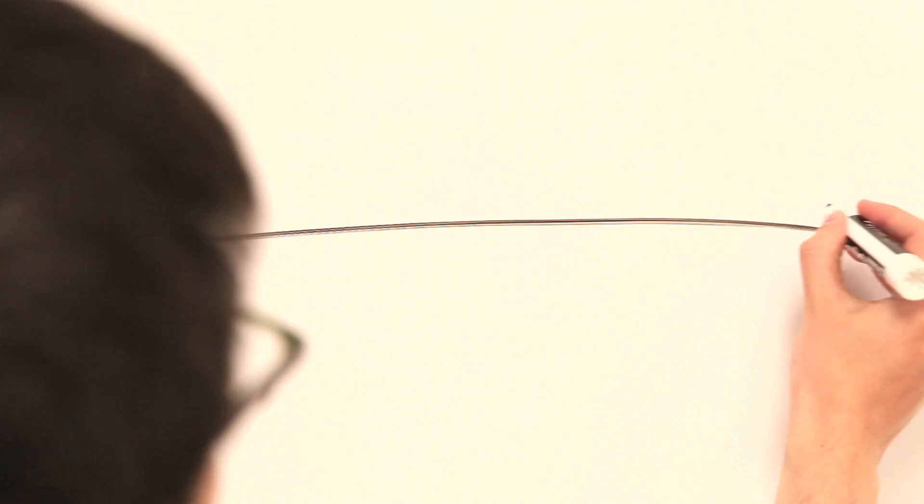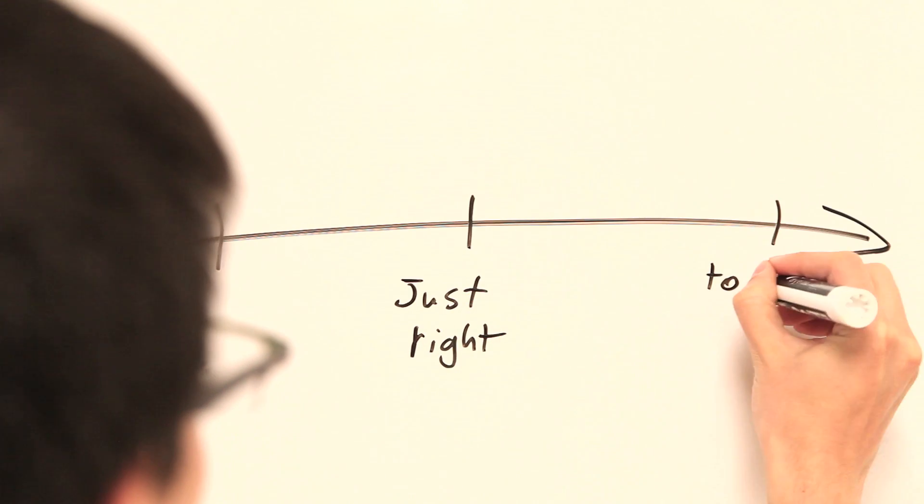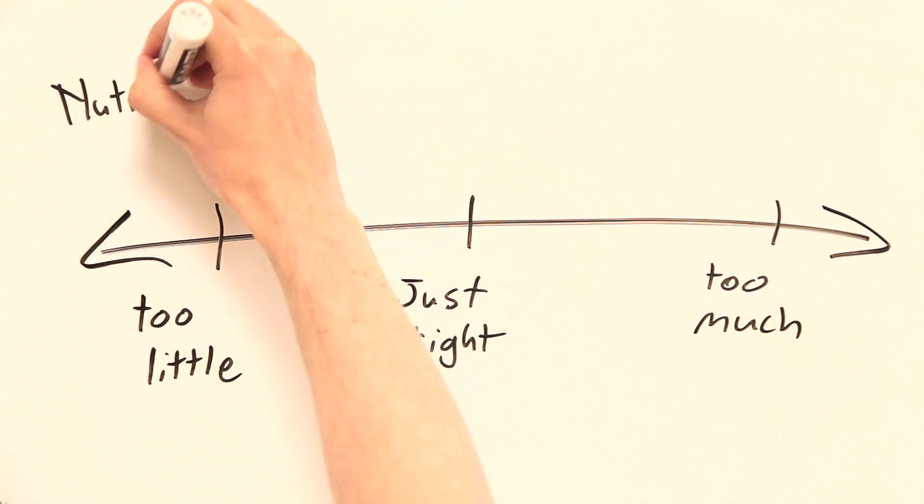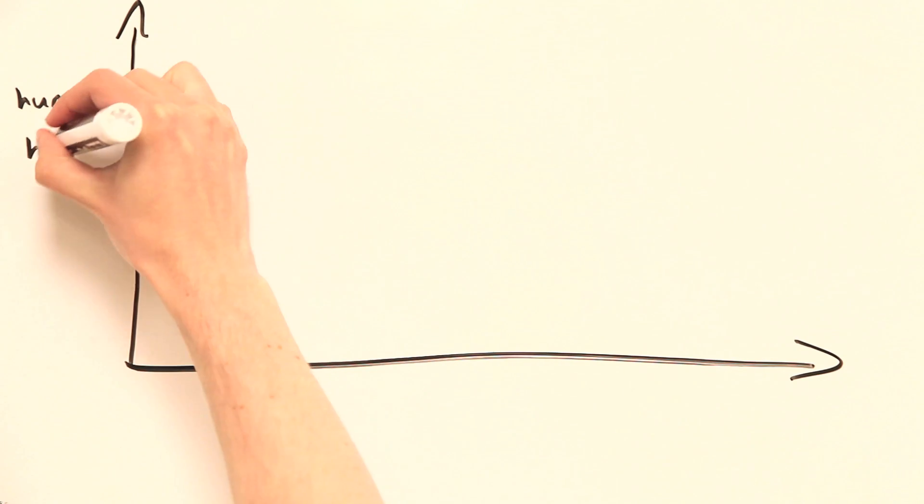But how much is too much, and how little is too little? These are the questions asked and answered by the toxicological and nutritional sciences, respectively. Both fields are concerned with the amount of an exposure that a person can tolerate without losing homeostasis. They just approach the problem from opposite directions.